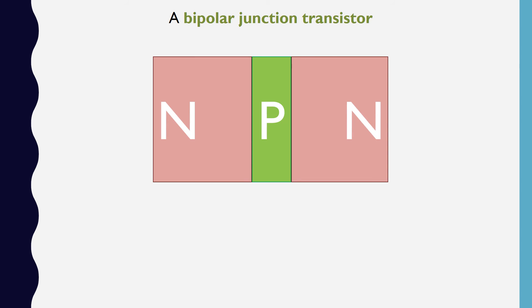Let's look at how it works. From left to right, we call the layers the emitter, the base, and the collector. There are depletion regions between each n-p and p-n pair, preventing electrons from freely flowing, just like in the diode.